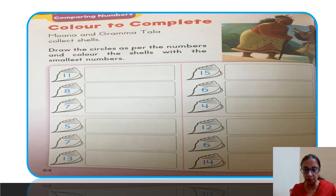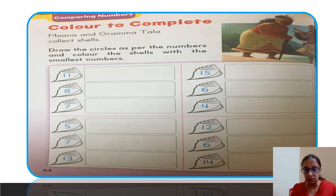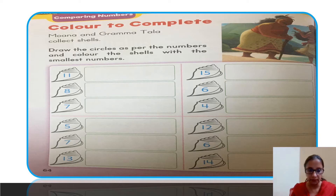Draw the circles as per the numbers. Students, first you have to draw circles on each shell — whatever number is written on that shell. For example, the first shell has the number eleven, so you have to make eleven circles here. Let's start: one, two, three, four, five, six, seven...